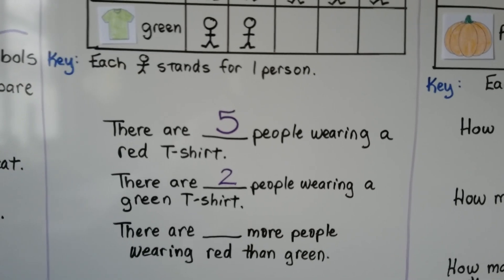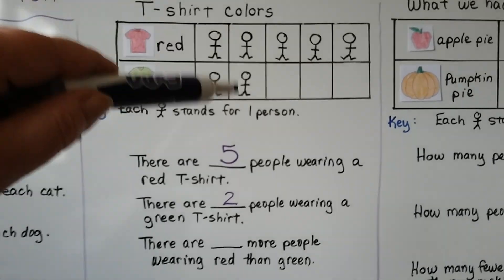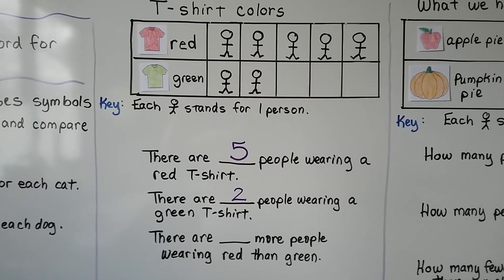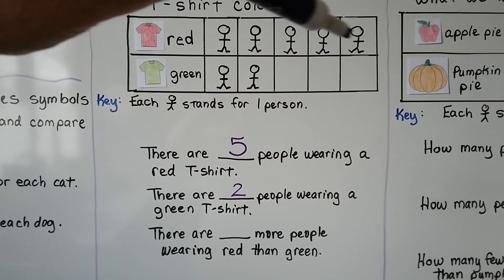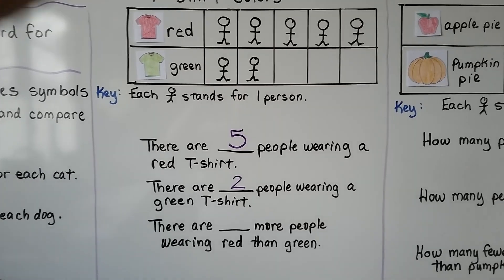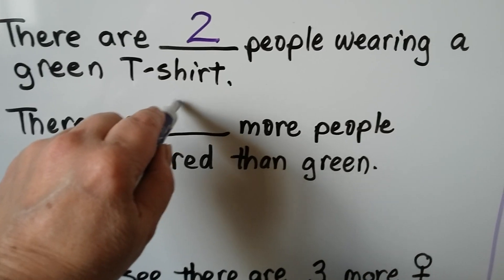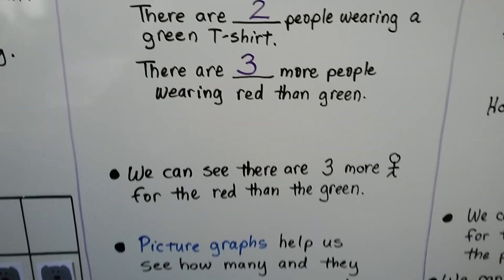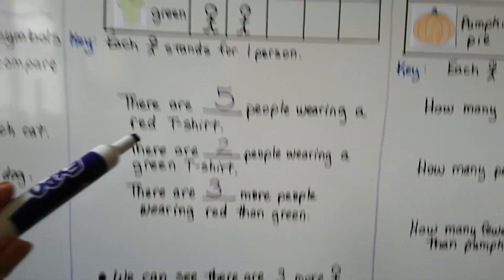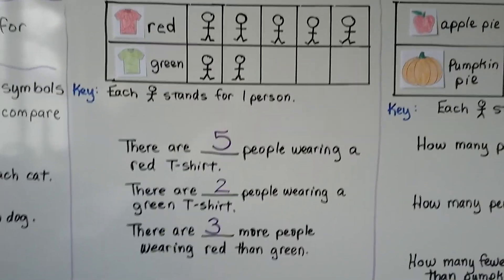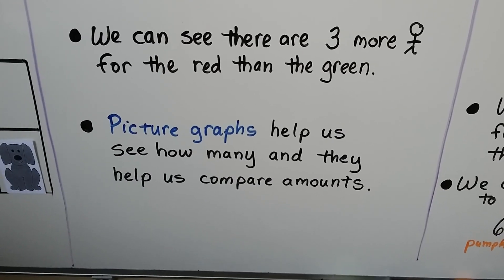There are blank more people wearing red than green. We can look at the picture graph and compare them very easily. We look at these blank spaces and the red is filled in, so we know there are one, two, three more. There are three more people wearing red than green. We can see there are three more little stick people for the red than the green. Picture graphs help us see how many and help us compare amounts.